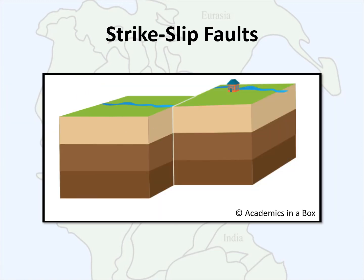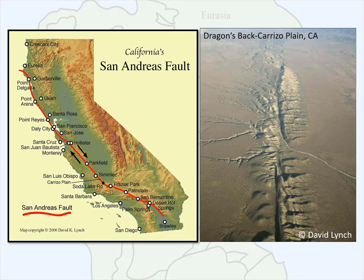Strike slip faults occur when the crust moves laterally due to shear stress. Their movement is dependent on the strike of the landscape — they move left or right relative to the fault plane, so instead of an up or down motion it's a horizontal motion. Strike slip faults are often connected to ridges, or they can develop into their own transform plate boundaries. Another name for strike slip faults is transform faults.